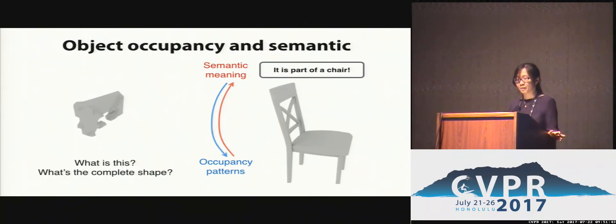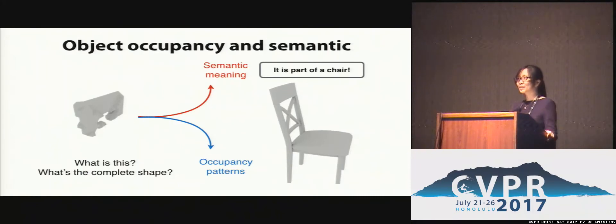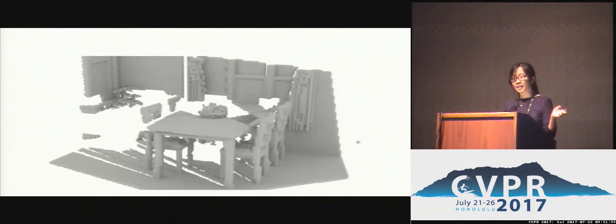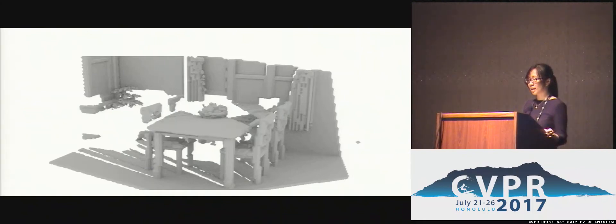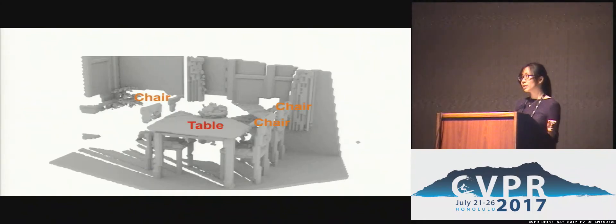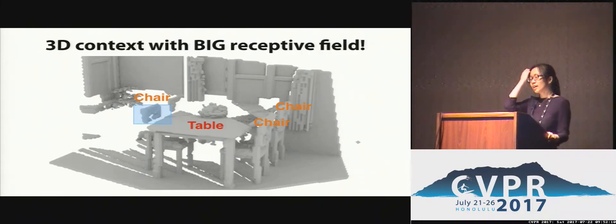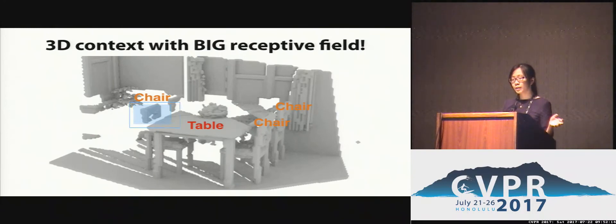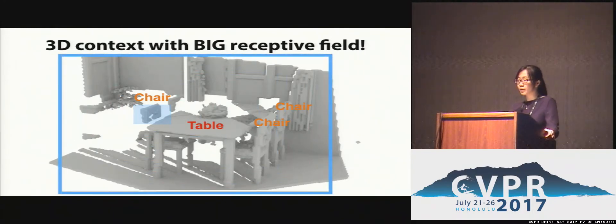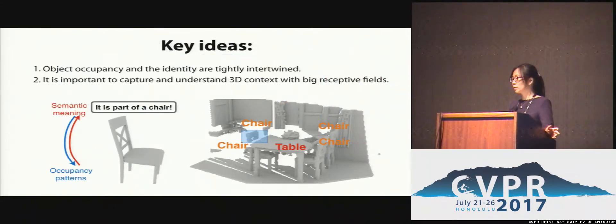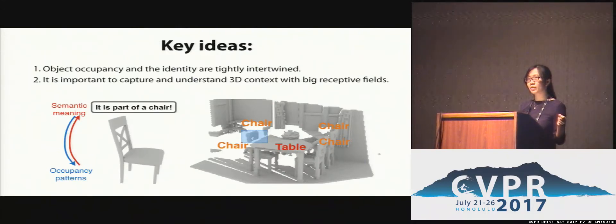But what if we don't know either, and want to solve both at the same time? What if instead of showing you only part of the chair, I showed you more context? It becomes easy once you recognize the table and chairs surrounding it. Although you observe only a small portion of the chair, you can recognize it because of the 3D context. Therefore, instead of only looking at local geometry, it is extremely important for the network to have a big enough receptive field to capture full 3D context information.